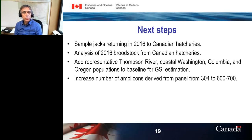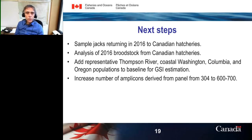Our next steps include sampling jacks returning in 2016 to Canadian hatcheries and analyzing the broodstock from those hatcheries. We're adding additional populations from the Thompson Coast of Washington and Columbia and Oregon for our GSI application. We're also increasing the number of amplicons from 304 — the panel is being redesigned with another 260 primer pairs added to the pool, so we hope to have approximately 500 to 600 amplicons derived from a single PCR.